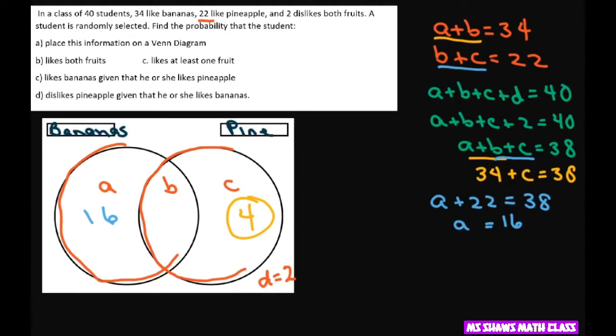And if A is 16, let's go back up to this one. 16 plus B equals 34. So B if you subtract 16 from both sides, B is going to be 18. So if you add all these numbers up, it should equal your universal set of 40.